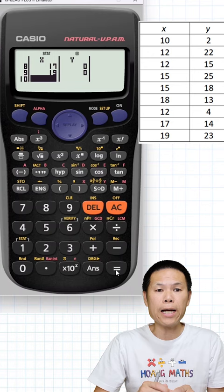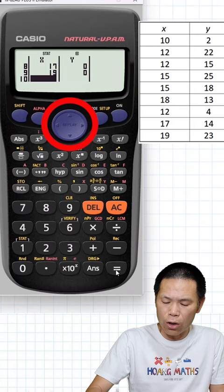We have entered column X, the X variable. Press the arrow across and arrow down to bring the cursor to the top.